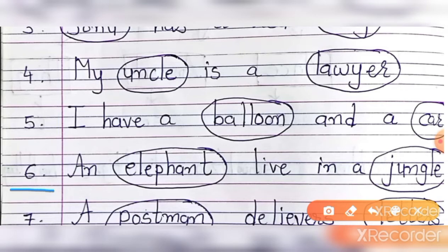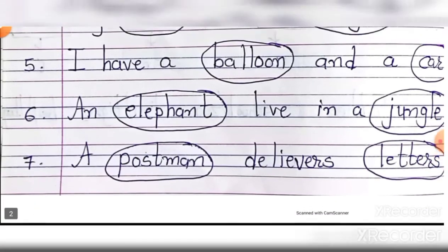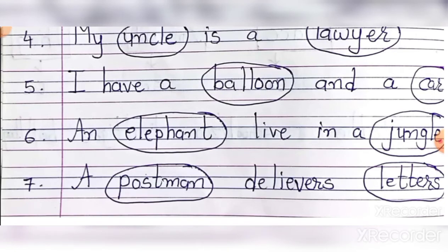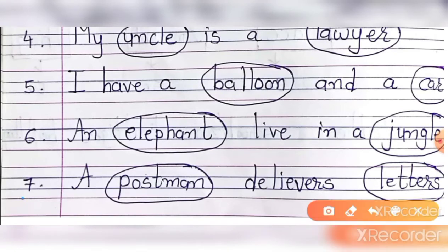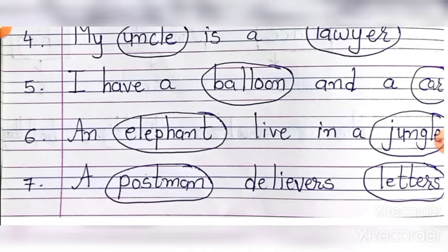An elephant lives in a jungle. Elephant woh animal ka naam hai — hathi. Aur jungle woh place hai, toh woh noun hai joh hume place batata hai. A postman delivers letters. Toh postman — uske upar circle hai. Aur letters — letters matlab chithiyaan, postman chithiyaan deta hai. Right.